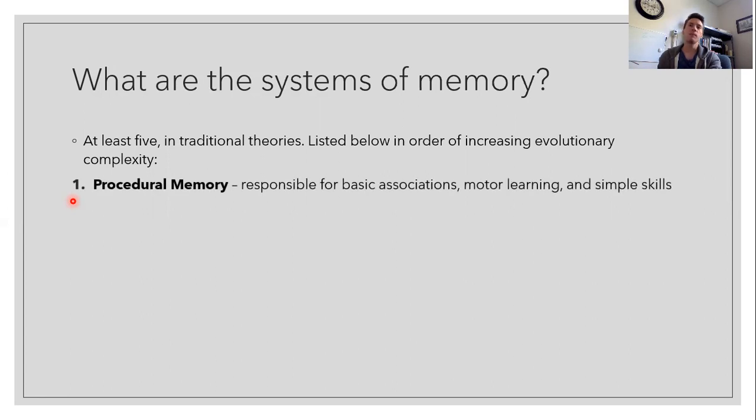Now procedural memories are really basic memories for how to do things, motor learning, or simple skills such as walking, for example. So learning how to walk requires some type of memory, but it's not necessarily as complex as, say, remembering what you did last weekend. But this is nevertheless a type of memory.